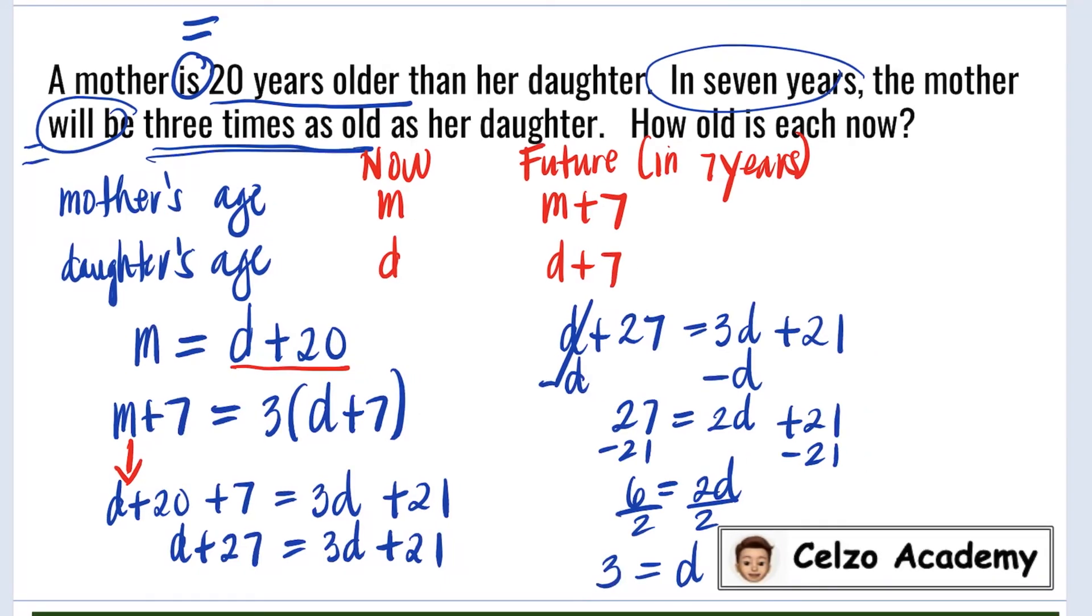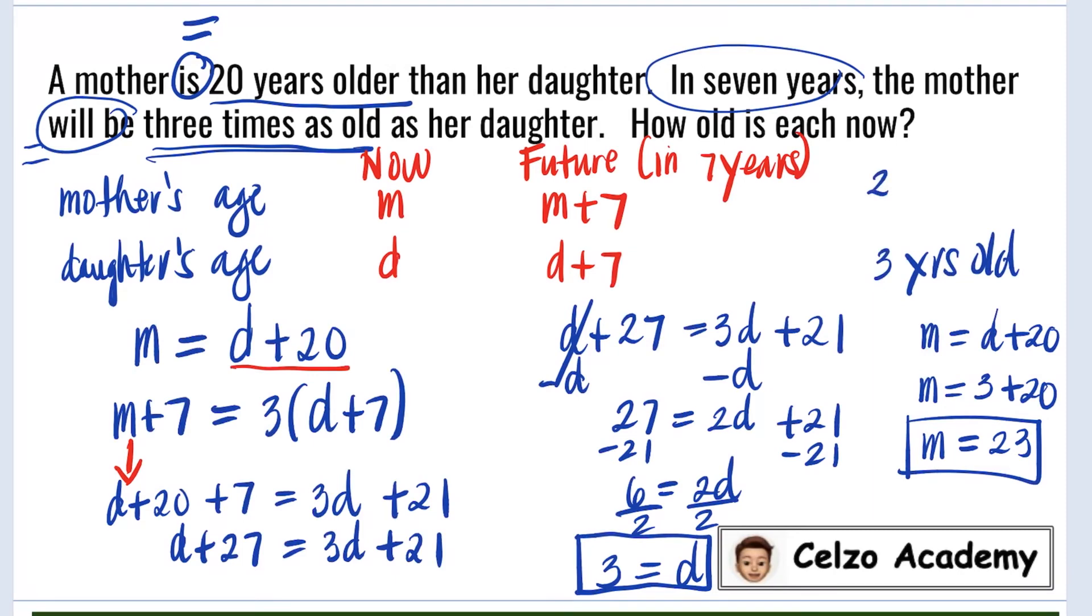So this means that the daughter is 3 years old now. And using the equation M is equal to D plus 20, we can solve for the mother's age by substituting D is 3. So we have 3 plus 20, and now we have M is equal to 23. So this means that daughter's age is 3 years old now, and the mother is 23 years old now.